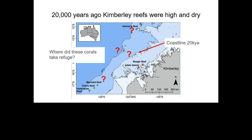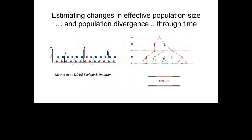We used some demographic methods — a few different ones — but I'll tell you about one: a sequentially Markovian coalescent method. Basically, it divides the genome into non-recombining chunks, and within each chunk we estimate the time to most recent common ancestor of the haplotypes. That gives us coalescent events, and then we can estimate effective population size through time, because times in the past with many coalescence events correspond to times when the population was quite small, and vice versa.